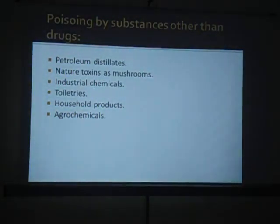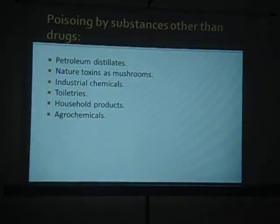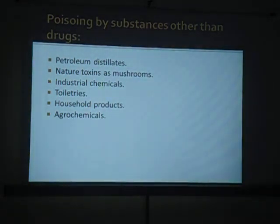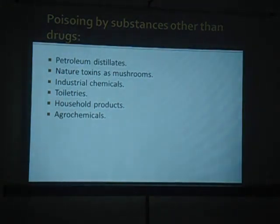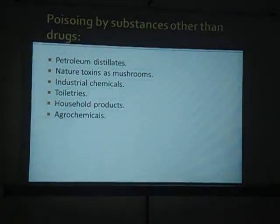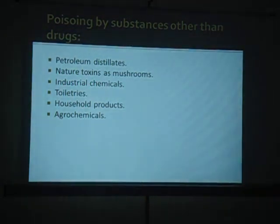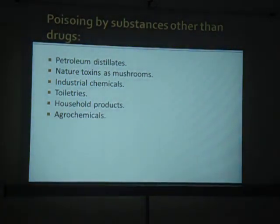Other poisonous substances include petroleum distillates - if you consume petrol, diesel, liquid paraffin, or other petroleum products, they can cause problems. Natural toxins: mushrooms are used as vegetables nowadays, but there are some toxic mushrooms which, if not identified correctly, can lead to poisoning. Industrial chemicals, toiletries used for cleaning purposes, household products, and agrochemicals can also lead to poisoning.